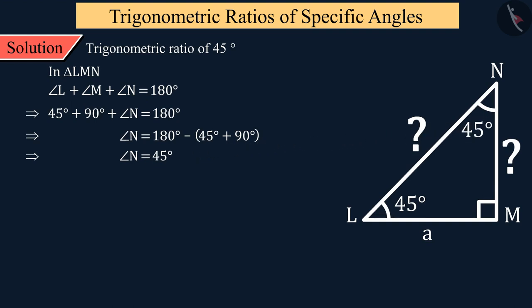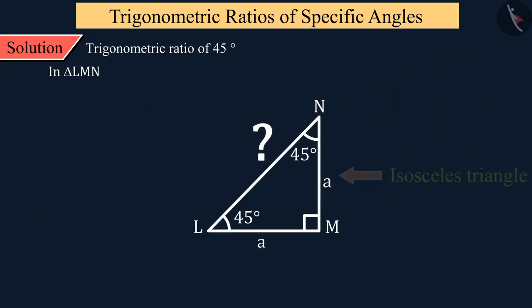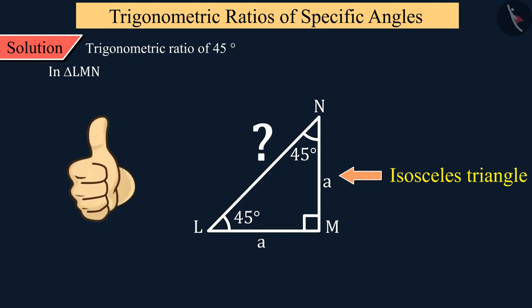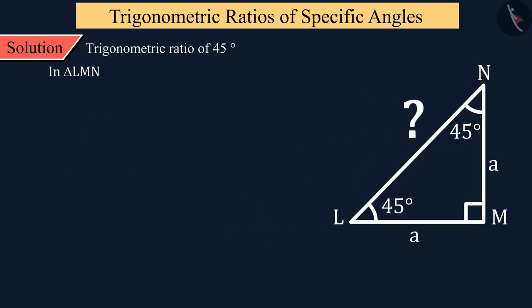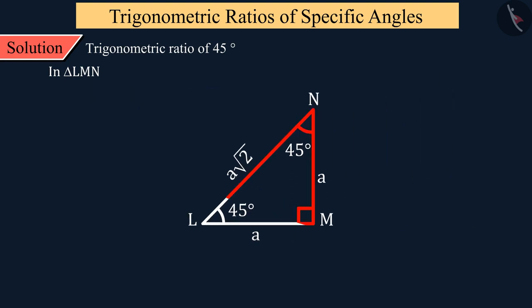Therefore the value of the remaining angle N of triangle LMN will be 45 degrees — that is, the values of angle L and angle N are equal. Hence we can see that the sides LM and MN are of equal length, making it an isosceles triangle. Using the Pythagoras theorem, the measure of the hypotenuse LN is a√2.